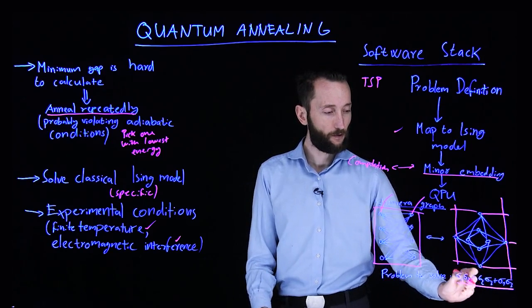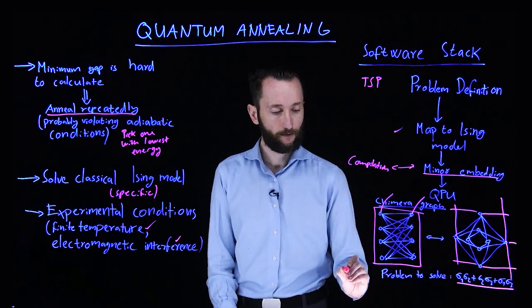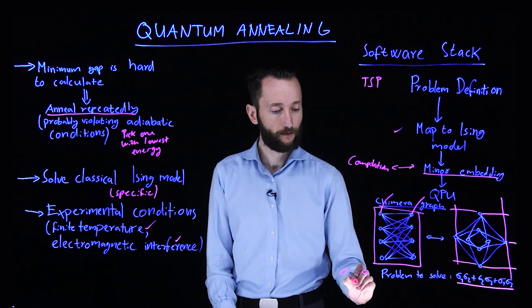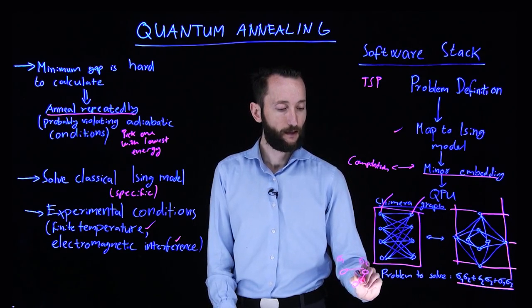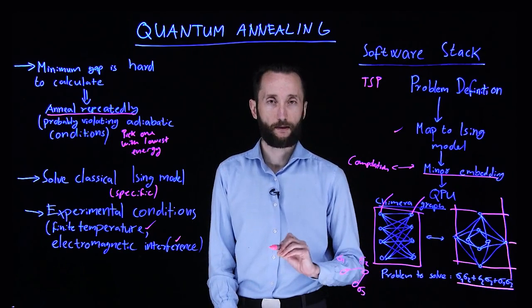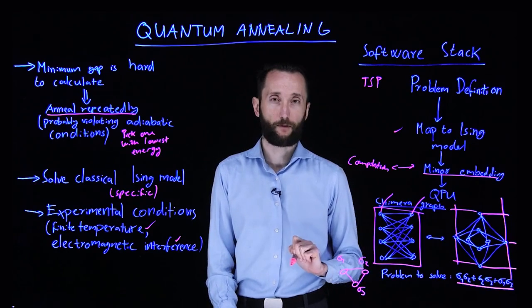If you write down what's the connectivity structure of this, it's actually a K3. So here you would have sigma 1 interacting with sigma 2. Then you have sigma 2 interacting with sigma 3. And finally, you have sigma 1 interacting with sigma 3.